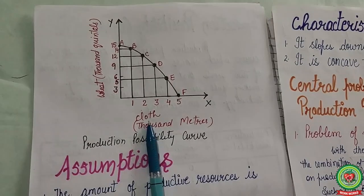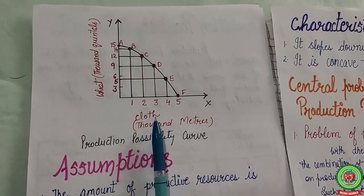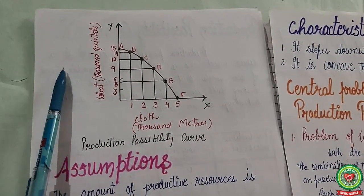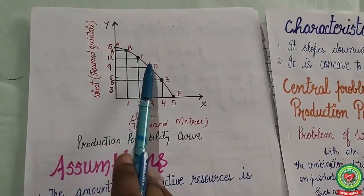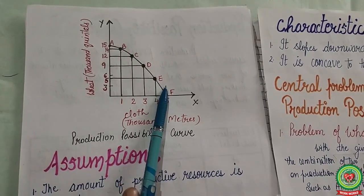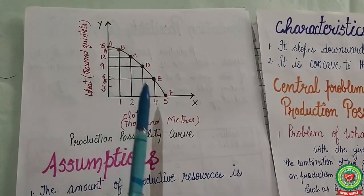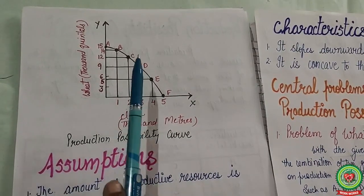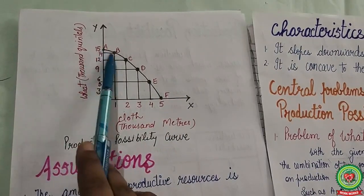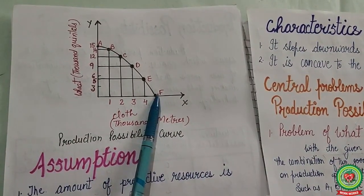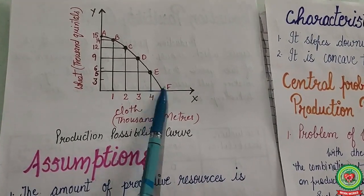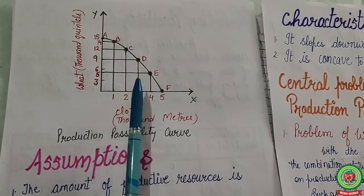In this diagram, the quantity of cloth produced is measured along the horizontal axis and the quantity of wheat along the vertical axis. The points A, B, C, D, E, and F show six possible combinations of these two commodities which the economy can produce with given resources and technology. By joining these points, we obtain a Production Possibility Curve.